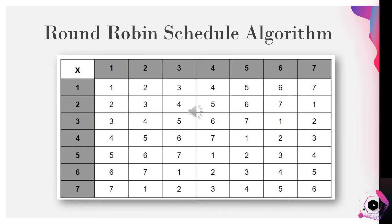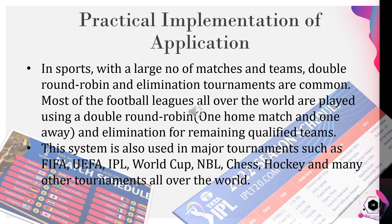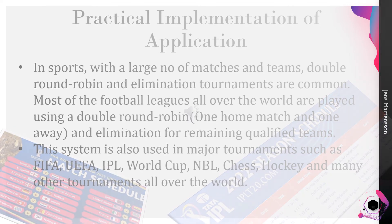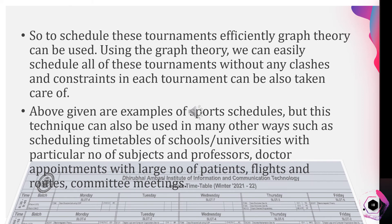The round robin schedule algorithm is shown here. For practical implementation: in sports with a large number of matches and teams, double round robin and elimination tournaments are common. Most football leagues around the world are played using a double round robin with elimination for remaining qualified teams. This system is also used in major tournaments such as FIFA, UEFA, IPL, World Cup, NBL, Chess, Hockey, and many other tournaments worldwide. Using graph theory, we can efficiently schedule all of these tournaments without any clashes, and the constraints in each tournament can also be addressed.